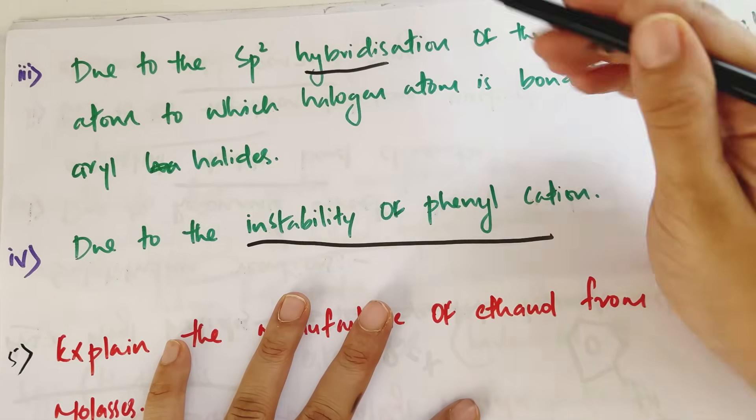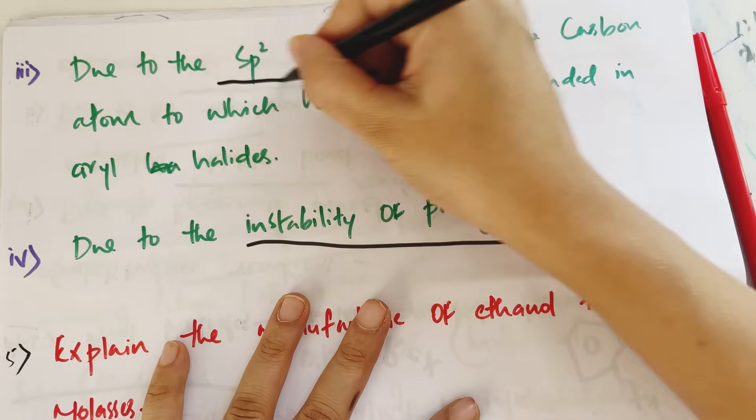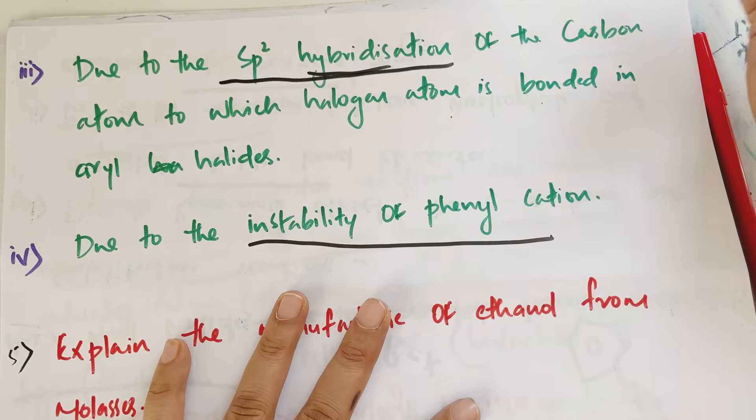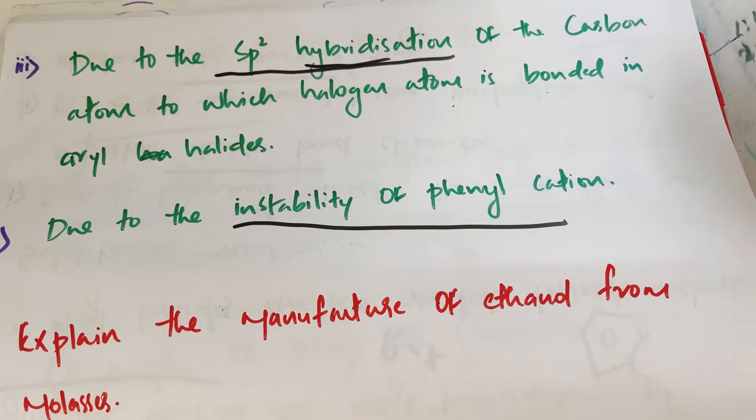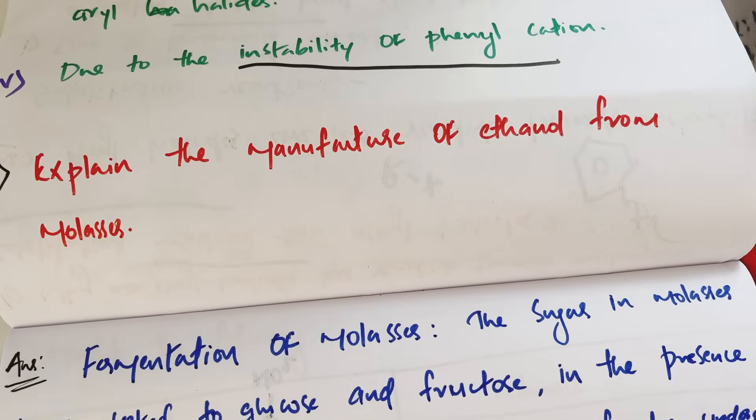The carbon in aryl halides is sp2 hybridized, and the phenyl cation formed would be unstable — these are the reasons for low reactivity.